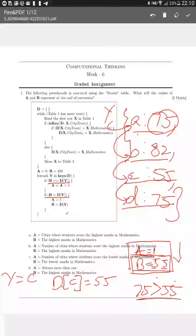So what is A doing here? A is basically keeping a track or keeping a count of the number of cities where the lowest marks were achieved, because A only increments if the lowest mark was already present in the dictionary.